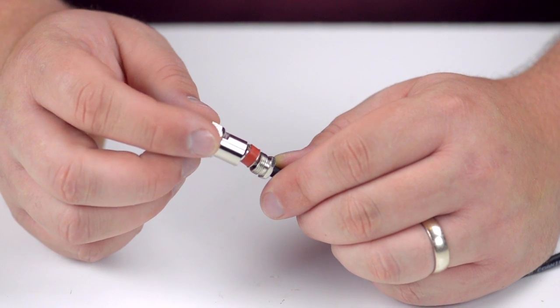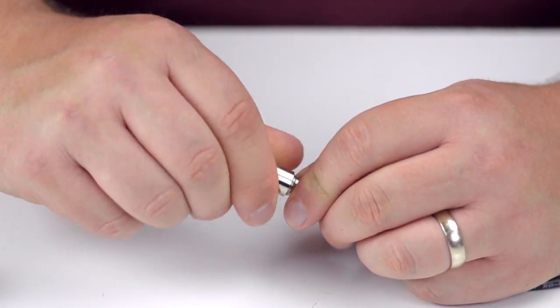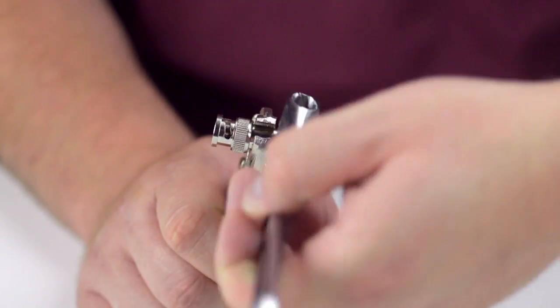Once soldering is complete, insert the connector housing, slide up the locking bolt, and hand tighten. Then finish tightening using the wrenches.